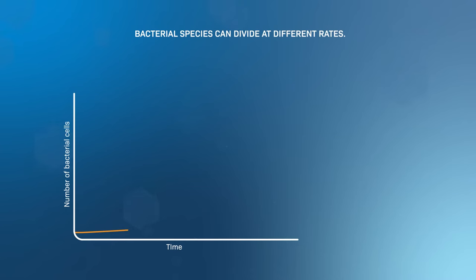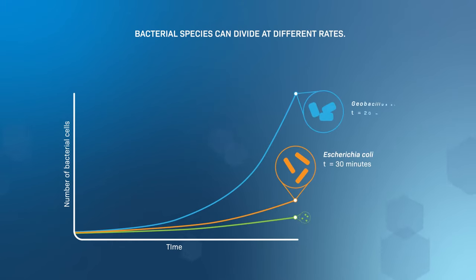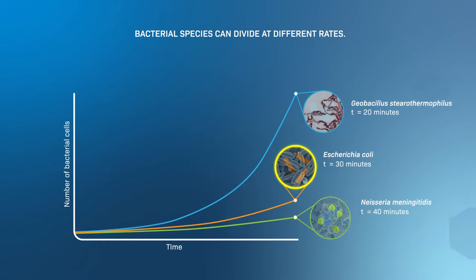The rate of replication varies between different types of bacterial cells. E. coli cells are preferred for laboratory experiments because they divide in a matter of minutes.